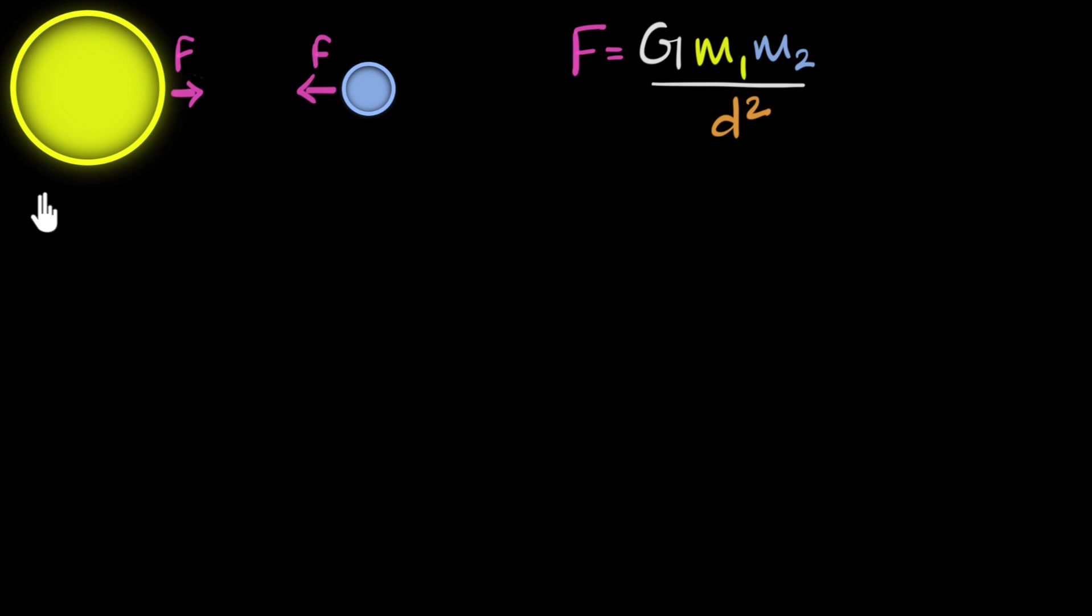And M1, M2 are the masses of the two bodies. So in our example, it would be the mass of the sun, and M2 might be the mass of the earth. And D represents the distance between the centers of the two bodies. So from the center of the sun to the center of the earth.